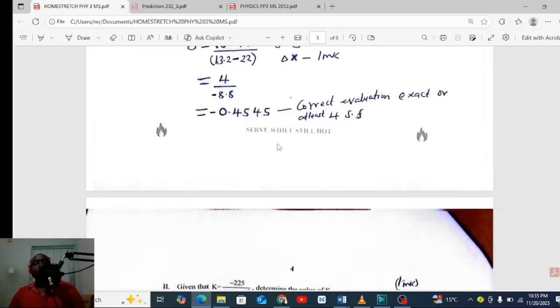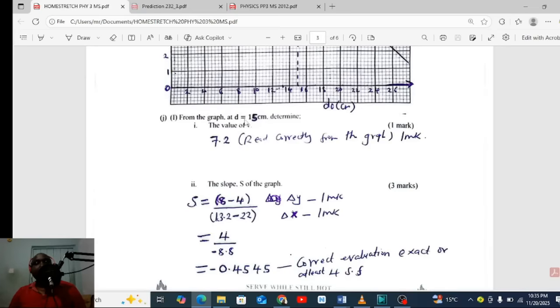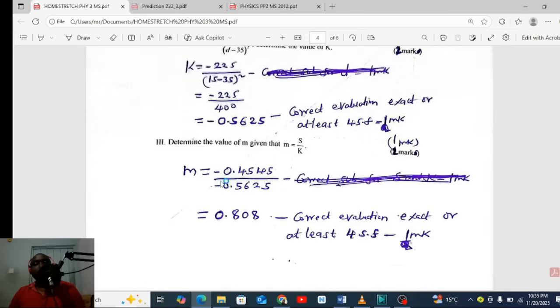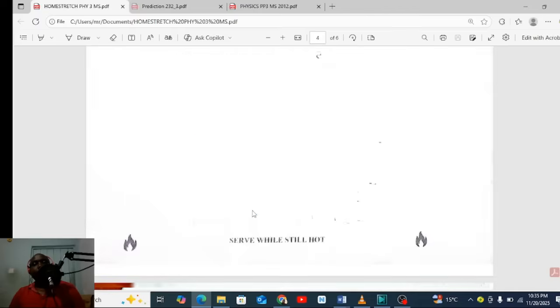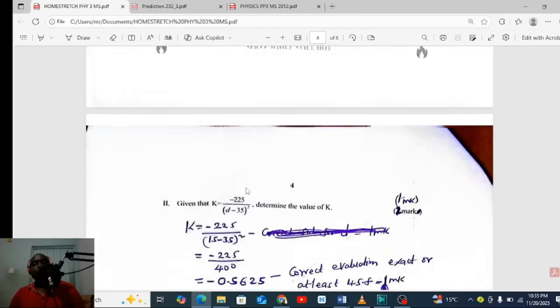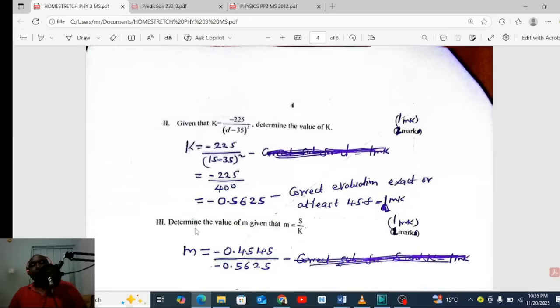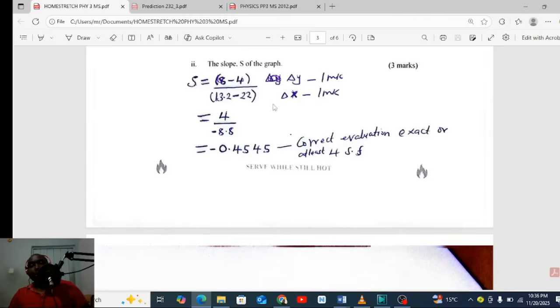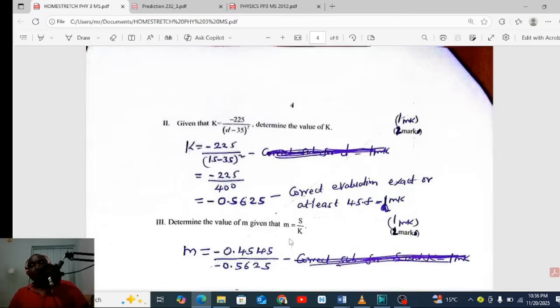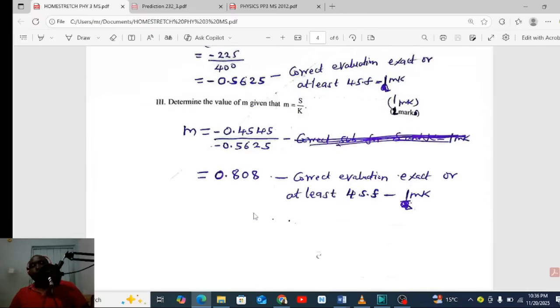So our d, we have been given, is 15. So you will take 15, you will bring 15 minus 35... n squared, you will calculate with the calculator, you are done. Determine the value of m. M equals slope over k. You come back to where your value of the slope is. Use it here correctly and you get the value m correct to four significant figures if it is not exact.